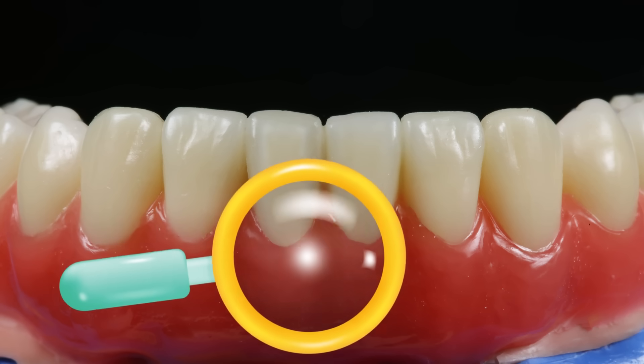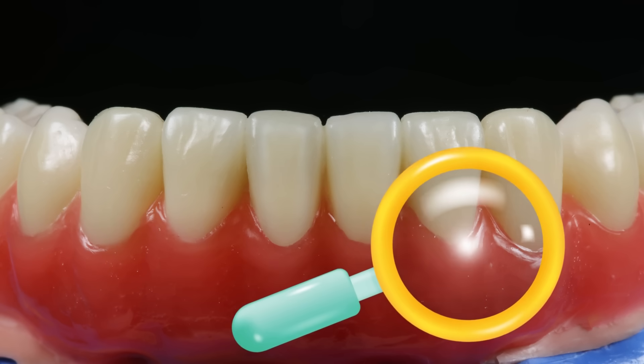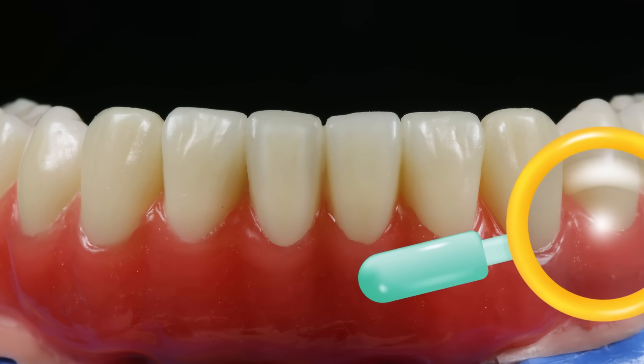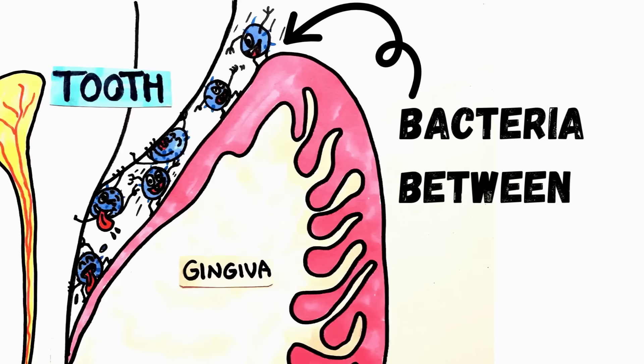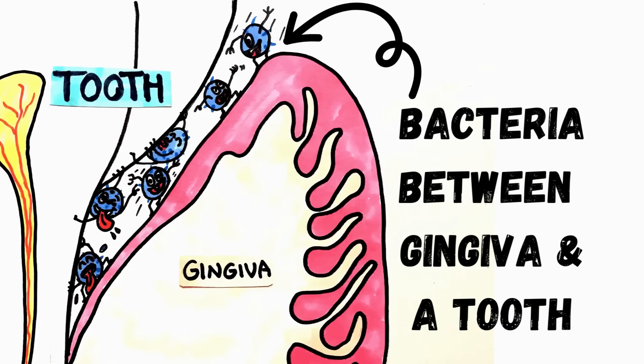So they can easily live within the tiny crevices in the oral cavity, such as the junctions between the gingiva and the teeth.